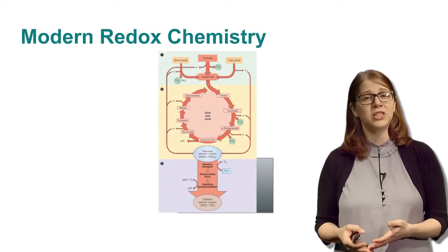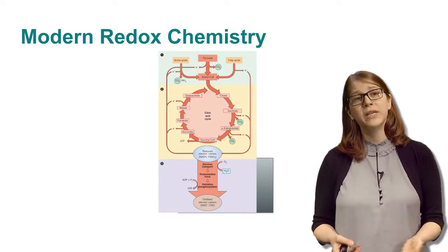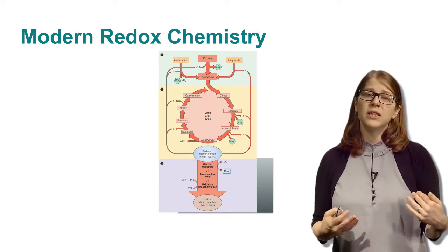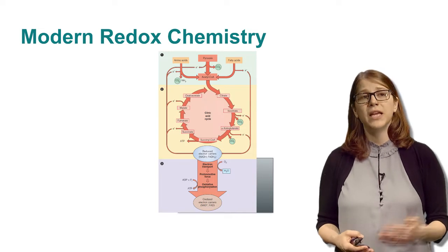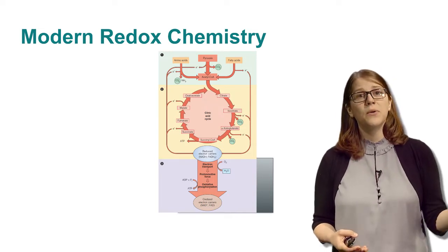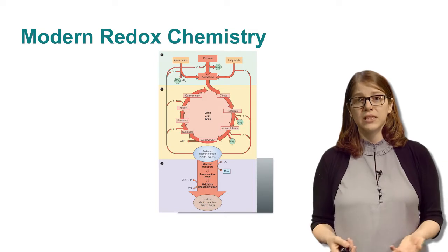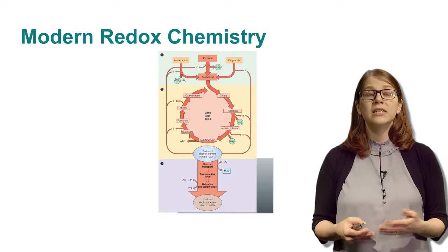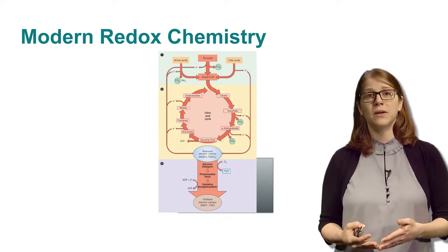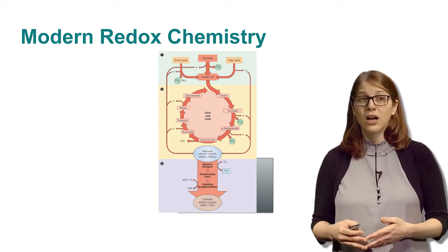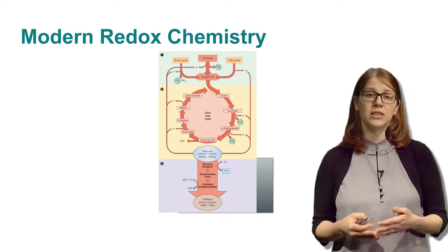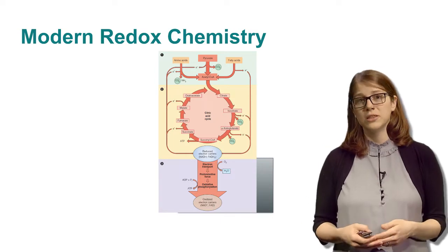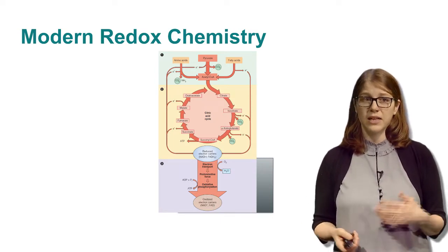The other question is how do these electrons really move once we have reduced carbon, and what do we think of when we think of electron transfer? When we think of modern redox chemistry, we have the citric acid cycle that generates reduced electron carriers, NADH and FADH2. Additionally, we get more of these from fatty acid beta-oxidation, from glycolysis, and from the degradation of proteins or amino acids. All of these feed electrons into our electron transport chain, which generates a proton gradient and gives us ATP.